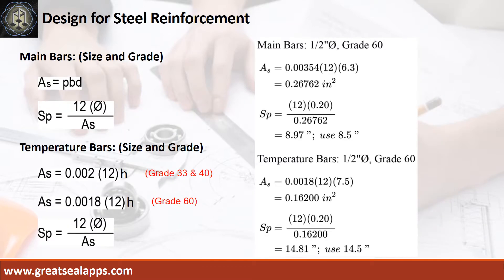Given RAW equals 0.00354, B equals 12 inches, and D equals 6.3 inches, the area of steel for main bars is 0.26762 square inch, and the spacing for ½ inch diameter bar is 8.5 inches.